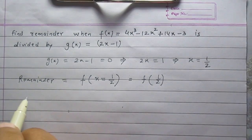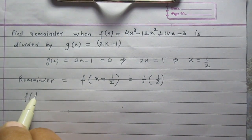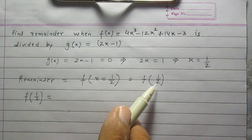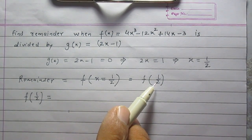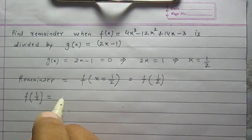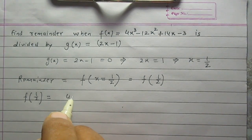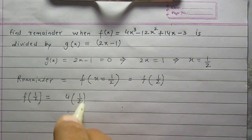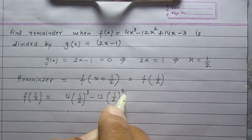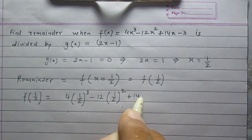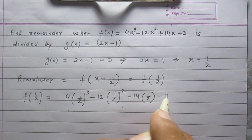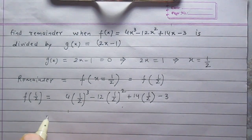So remainder f(1/2) can be found by substituting value of x = 1/2 here in this polynomial. So f(1/2) is nothing but 4 times (1/2)³ minus 12(1/2)² plus 14 multiplied by 1/2 then minus 3.